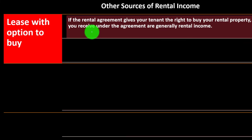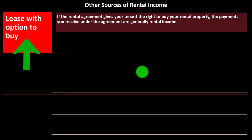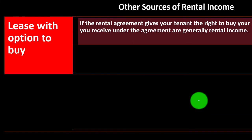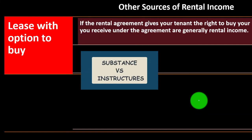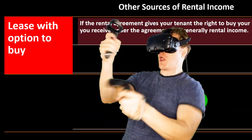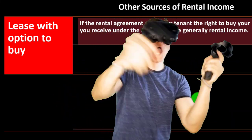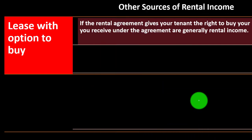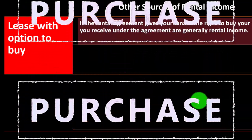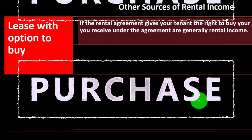We're continuing on to other sources of rental income. Lease with option to buy — this might be a less common type of lease structure, but leases can be put together in many different ways. Some of those ways run into substance versus structure type problems — a situation where something is set up structurally as a lease, but the substance of it actually looks more like a purchase. Those situations get a little bit more complex.